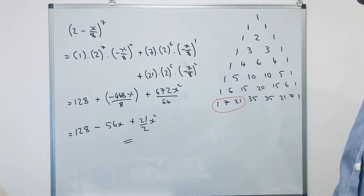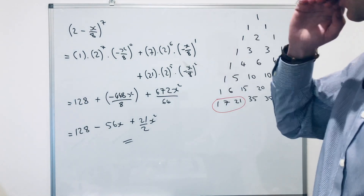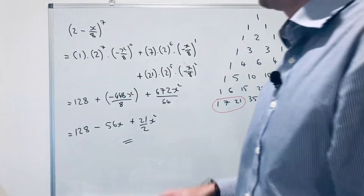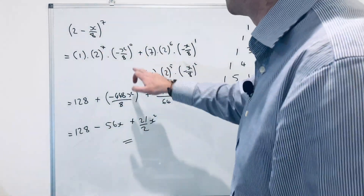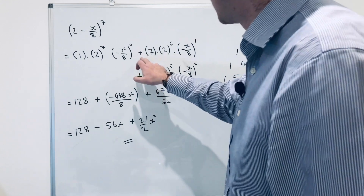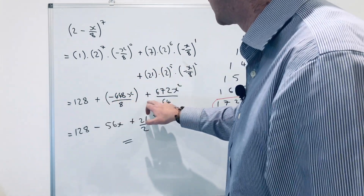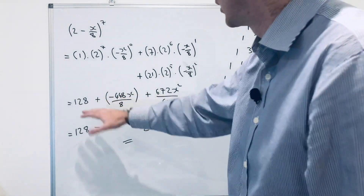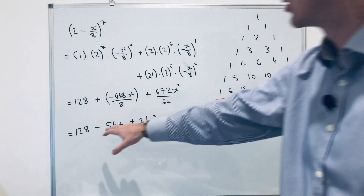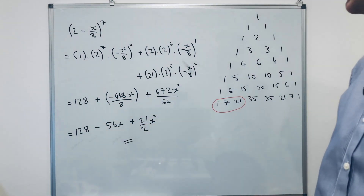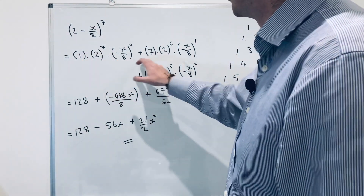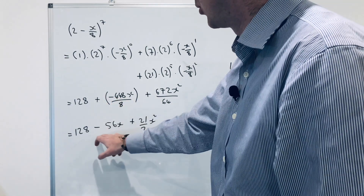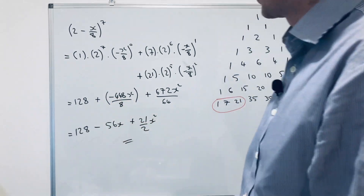Simplifying: 128 minus 56x — that's 448 divided by 8 — plus 21 over 2 times x squared — that's 672 divided by 64. That's 4 marks for that question. The key difference from the last one is the negative — be careful with it. I'd still put the plus sign in throughout, then let the negative overpower the positive when you simplify at the end.